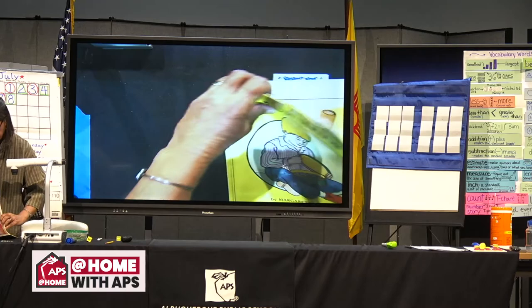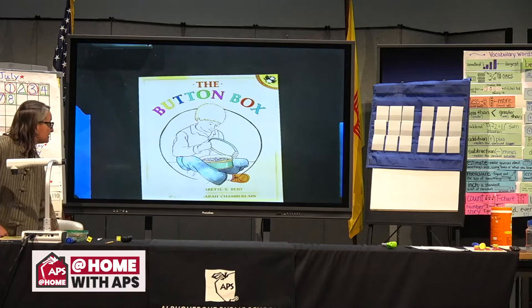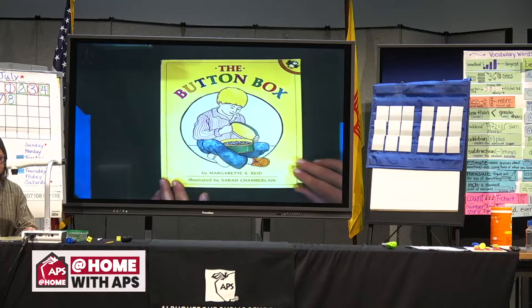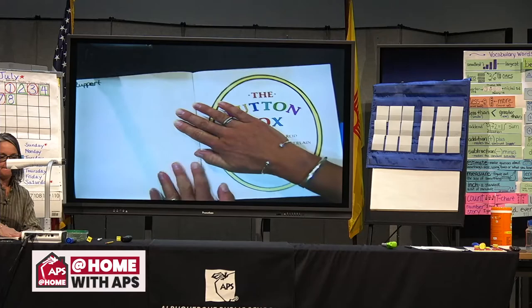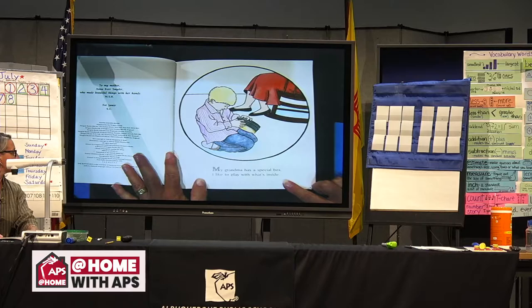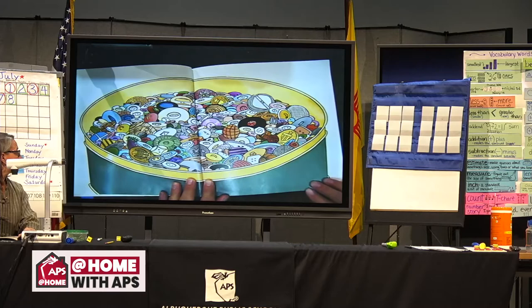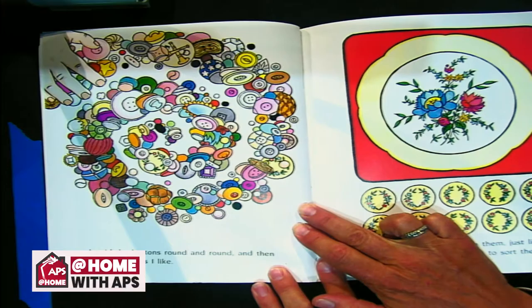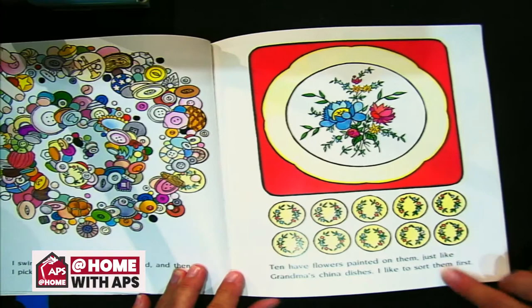This story is called The Button Box, written by Margaret S. Reed and illustrated by Sarah Chamberlain — a puffin unicorn book. Do any of you have a button box or a box of things you've collected at home? My grandma has a special box — I like to play with what's inside. I swirl the buttons round and round and then I pick the ones I like. Ten have flowers painted on them, just like grandma's china dishes. I like to sort them first. Did you know there were ten buttons in this picture? It's showing us the double — five on top, five on bottom, like a fancy ten frame.